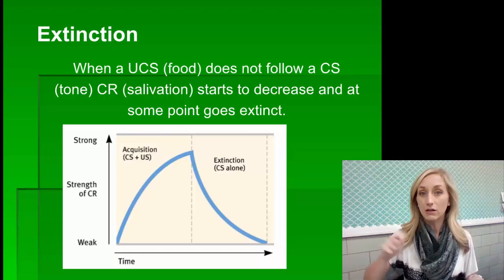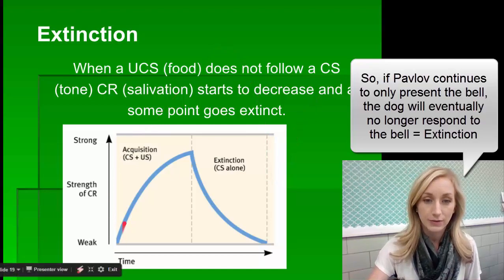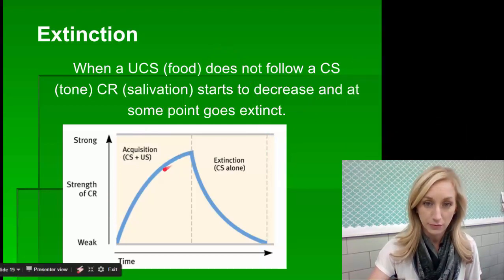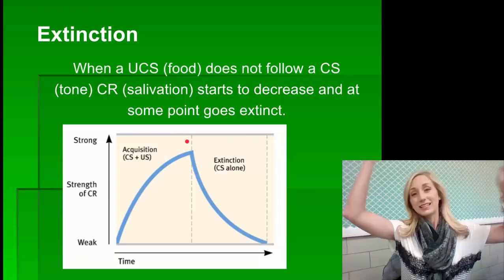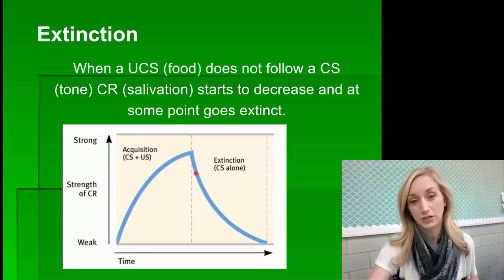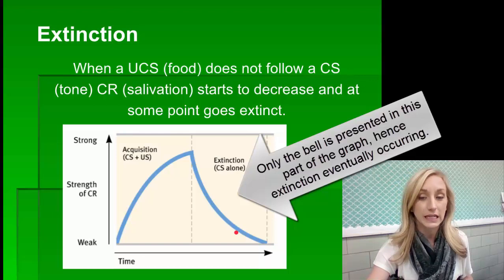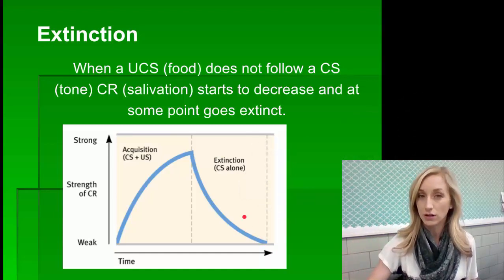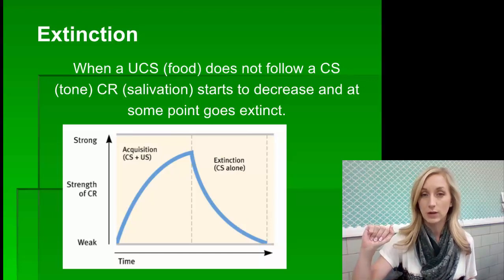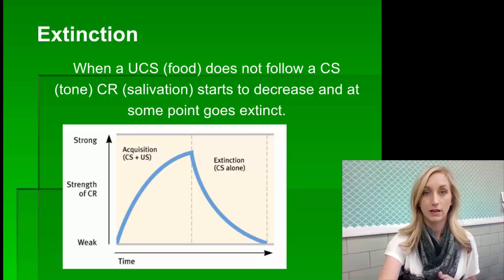So we ring the bell only from then on. This chart shows acquisition occurring with bell-food pairings and the dog salivating. Then we present only the bell — no food — and the dog still salivates, confirming conditioning. We keep doing just the bell, and eventually the conditioned response goes away — that's extinction. When I ring the bell and the dog no longer salivates, the response has gone extinct. He's no longer making the association between the bell and the food.